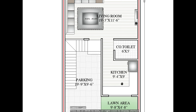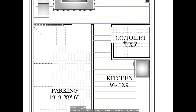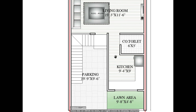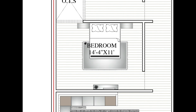The kitchen size is 9 feet 4 by 9 feet. Here we have also given a common toilet. The size of the common toilet is 6 feet by 5 feet 5. So this is our kitchen and common toilet, and from here we will be able to get into the bedroom.